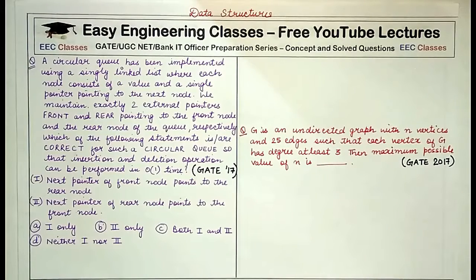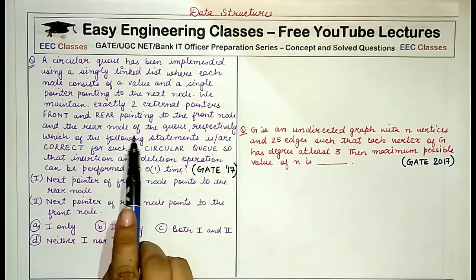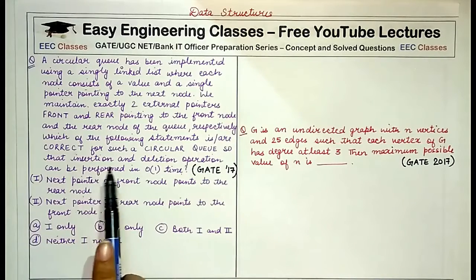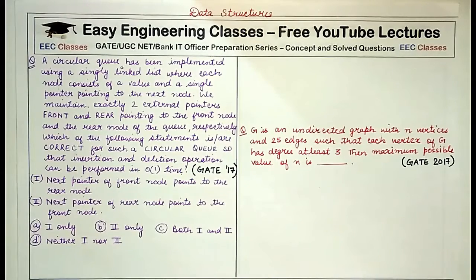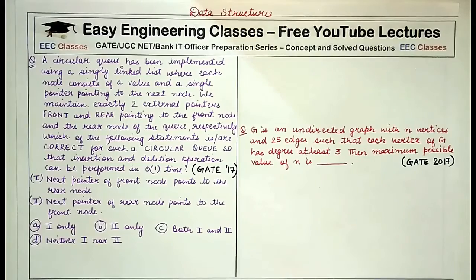The first question states that a circular queue has been implemented using a singly linked list where each node consists of a value and a single pointer pointing to the next node. We maintain exactly two external pointers, front and rear, pointing to the front node and the rear node respectively. Which of the following statements is correct for such a circular queue so that insertion and deletion can be performed in O(1) time? Statement one: next pointer of the front node points to the rear node. Statement two: next pointer of the rear node points to the front node.